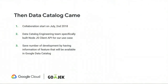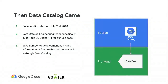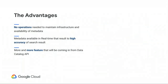With Data Catalog, we moved from that complex architecture to a simplified one — DataDex connected directly to the Data Catalog API. The advantages are significant: no operations required to maintain metadata infrastructure, since Data Catalog provides real-time metadata — when a BigQuery table is created, it automatically appears in the API. And with more features coming to Data Catalog, we can focus on creating business and technical metadata rather than maintaining the data discovery infrastructure itself.